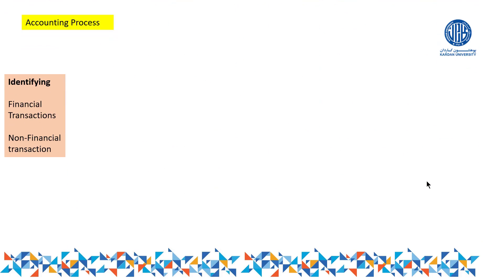Now let's explain the steps of accounting. Accounting starts with identifying. Identifying means we have to determine whether the transactions we want to record in the book of account are financial character transactions or non-financial character transactions. All transactions in a business can be divided into two parts: financial character transactions and non-financial character transactions.